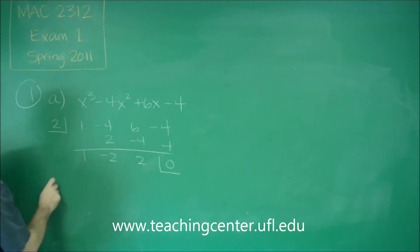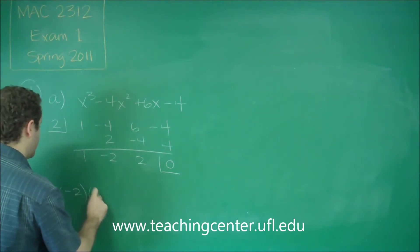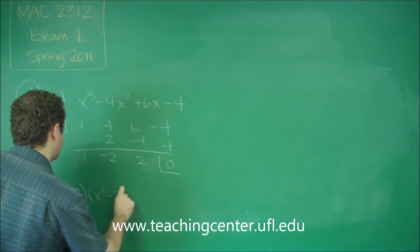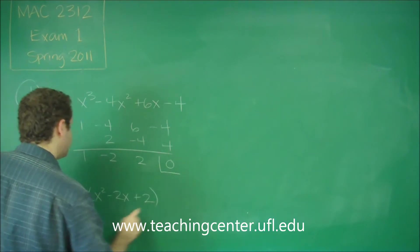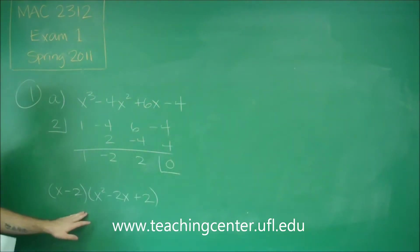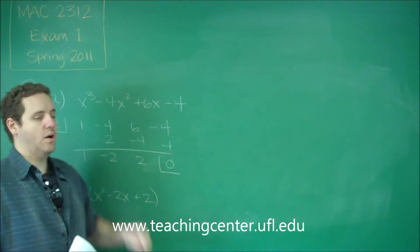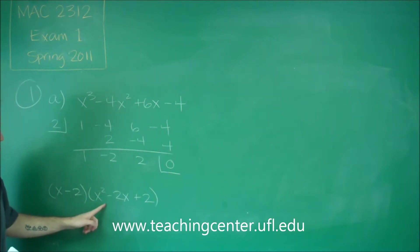Remember that this corresponds to the factor x minus 2. So that means x minus 2 is a factor of this cubic polynomial. And the rest is what's left here. So this corresponds to x squared minus 2x plus 2. So this is the factored form now of that cubic. And this quadratic equation that's left does not factor any further.